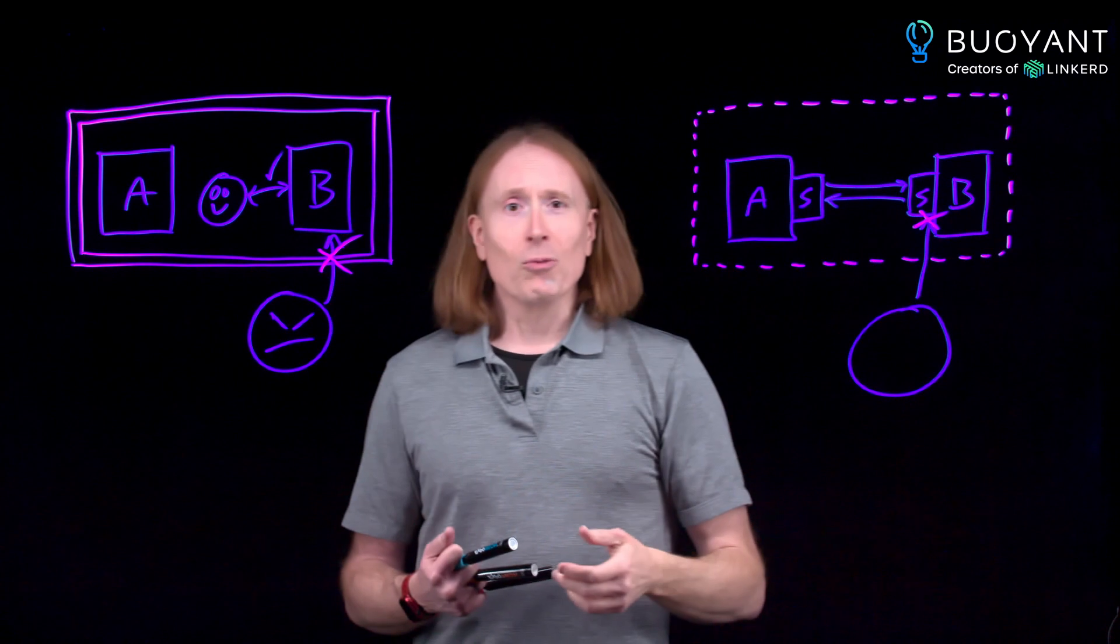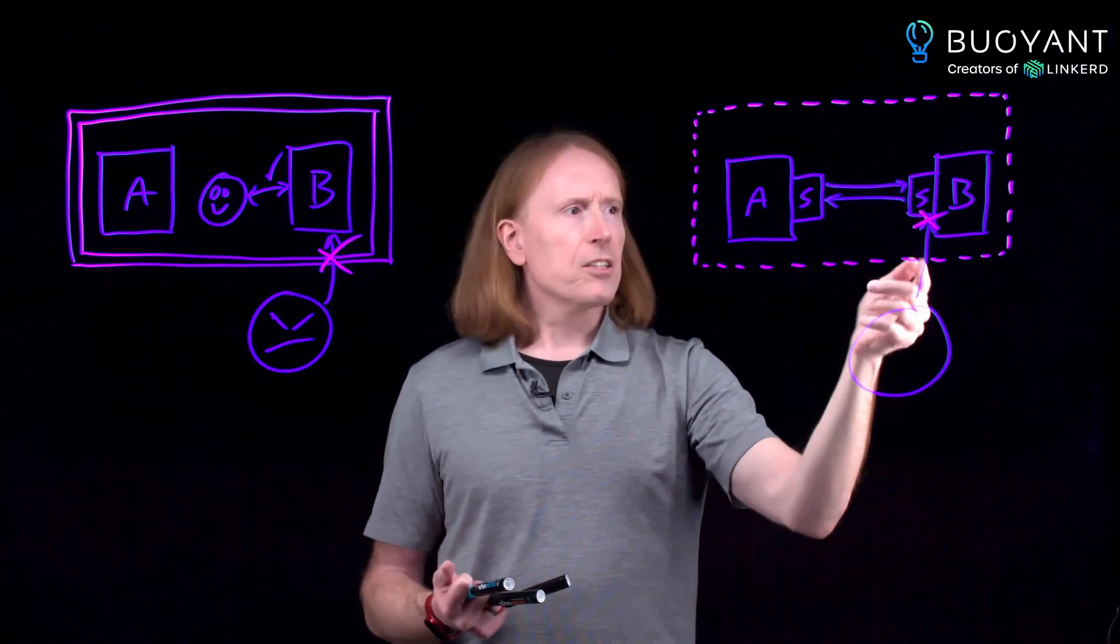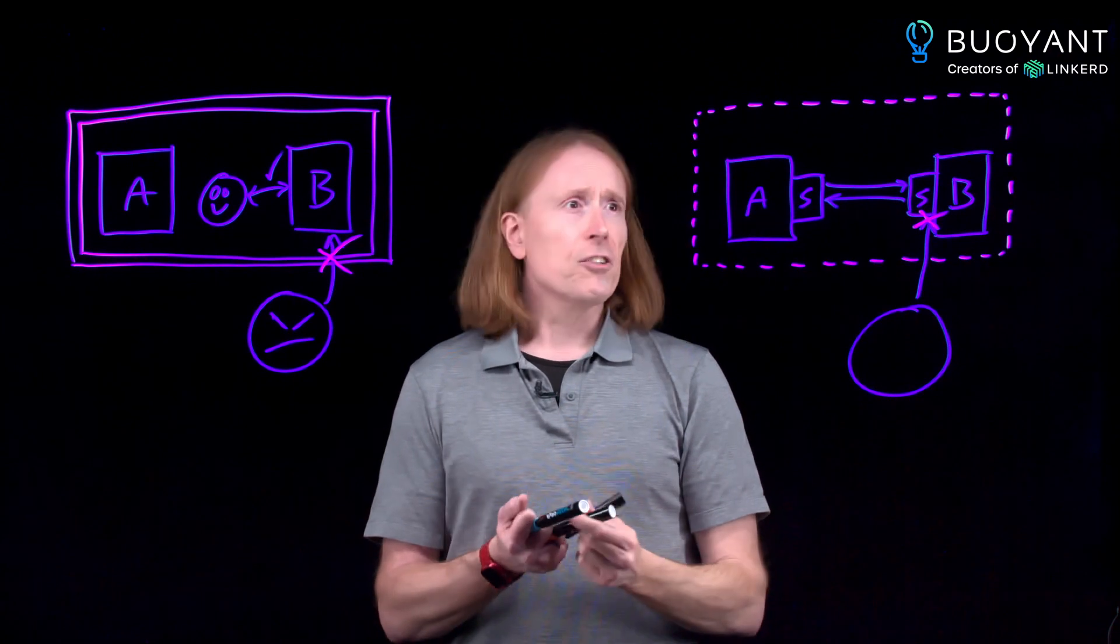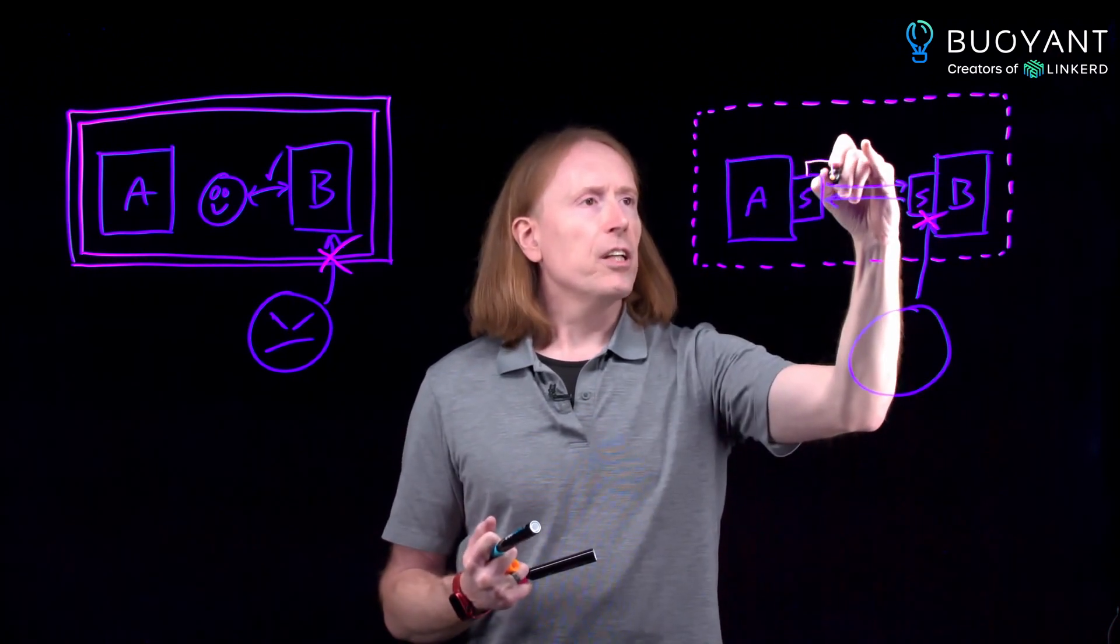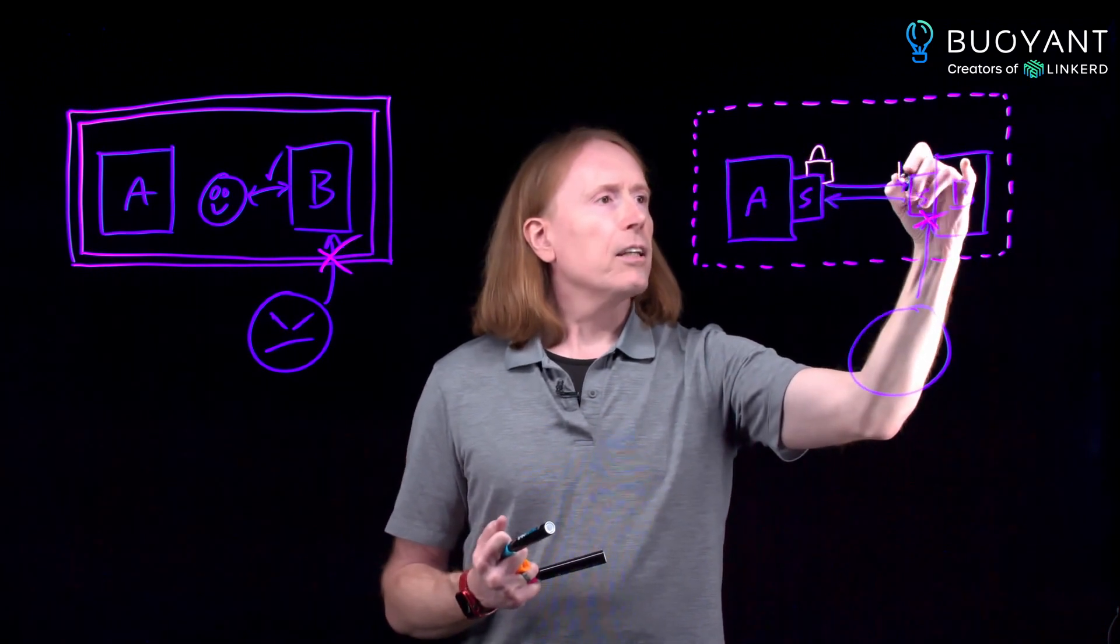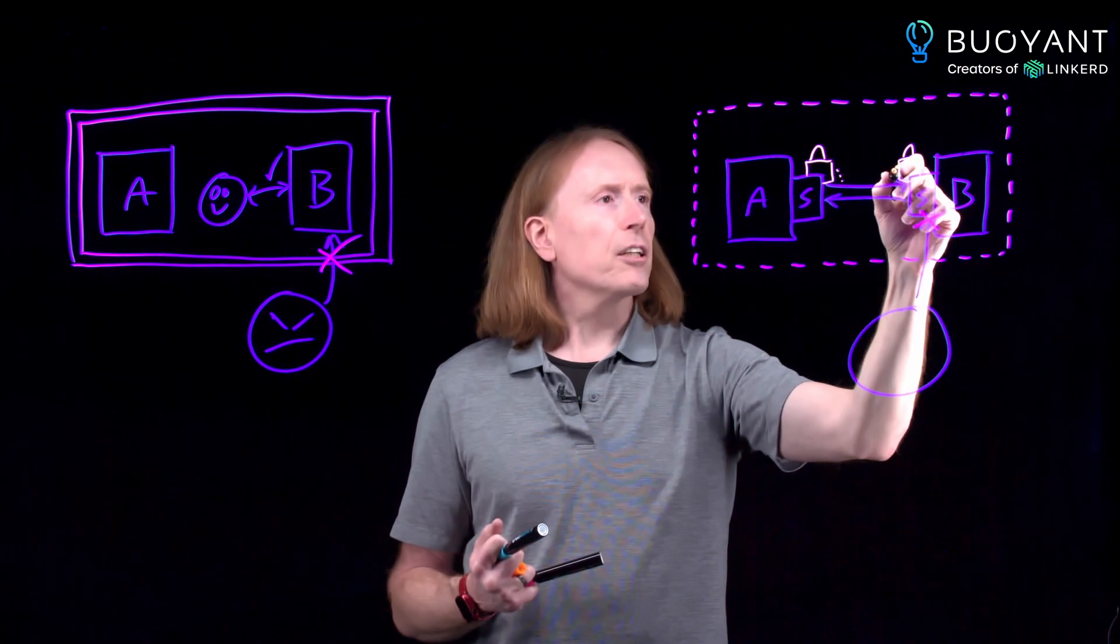This raises the fun question of, how does this sidecar know the difference between this request and this request? And the answer there is that we use certificates associated with each sidecar, and those certificates participate in this MTLS connection.